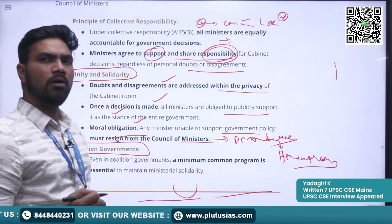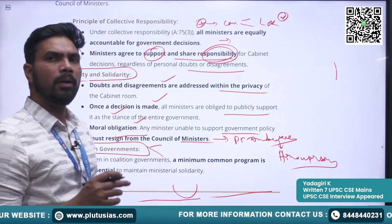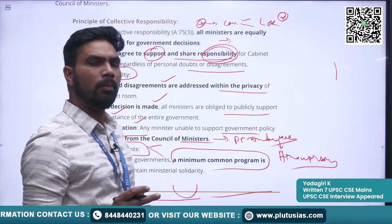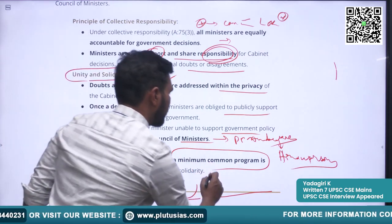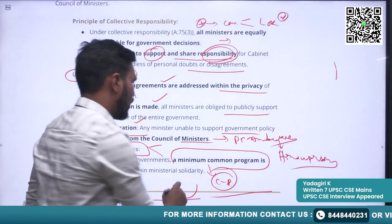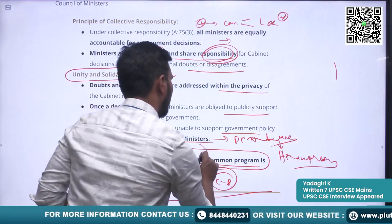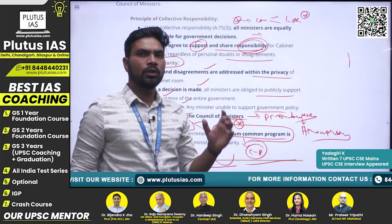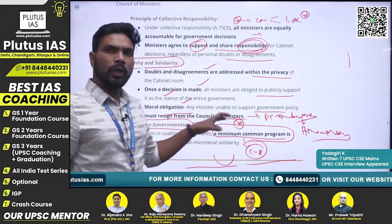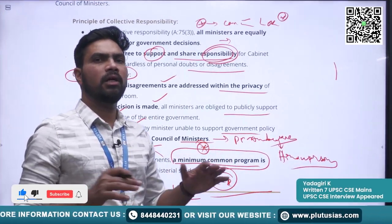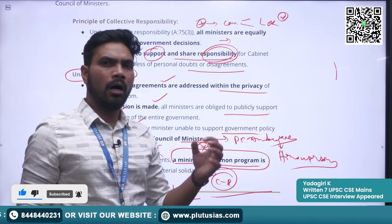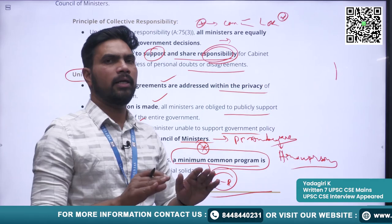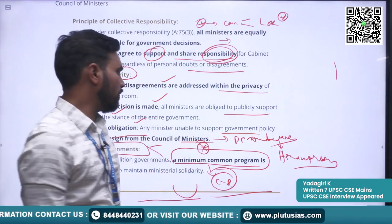When coalition governments are formed — where the government is formed by different political parties — the Council of Ministers still must abide by the principle of collective responsibility. For that to happen, parties must agree upon a Common Minimum Programme. The political parties must come to an agreement on a Common Minimum Programme on which they all have agreement, to nullify conflicts when the government is formed. This approach helps in upholding the principle of collective responsibility.